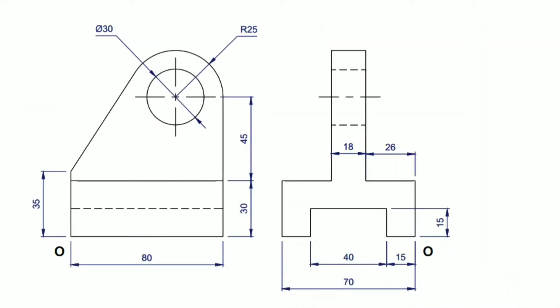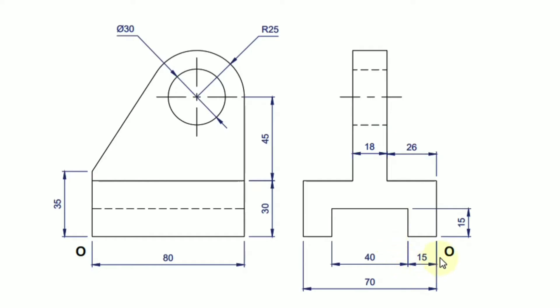Let's start with this isometric projection problem where two views of the object are given. If I consider this as the front view, the other becomes the left-hand side view. The origin point is given on the left-hand side of the front view — it is the point where the whole object is tilted at a single corner. The front view is drawn on the right-hand side of the origin, and the side view is drawn on the left-hand side.